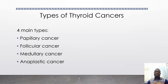Anaplastic cancer. The cancer cells in this case are very different from the normal thyroid cells. They grow and spread very fast, and therefore its treatment is more difficult.